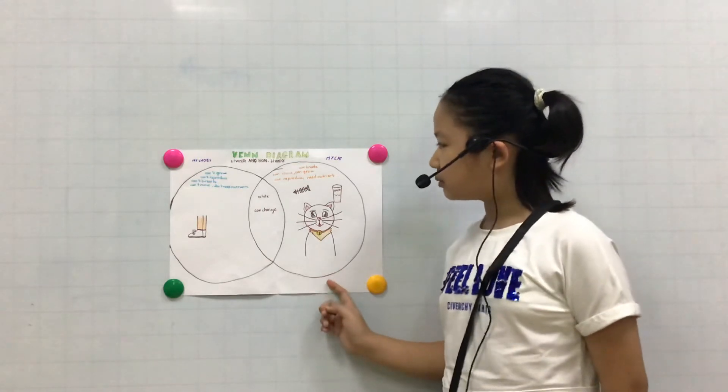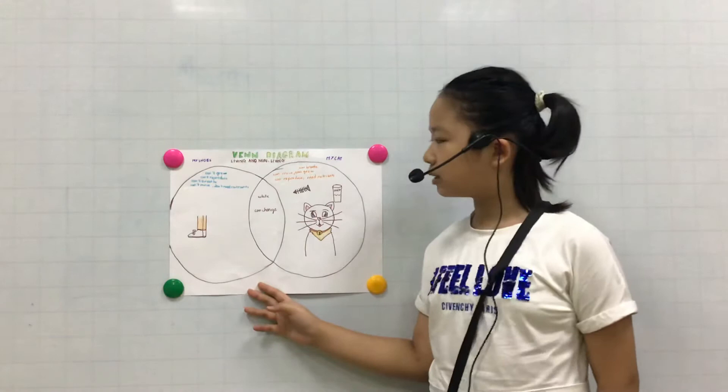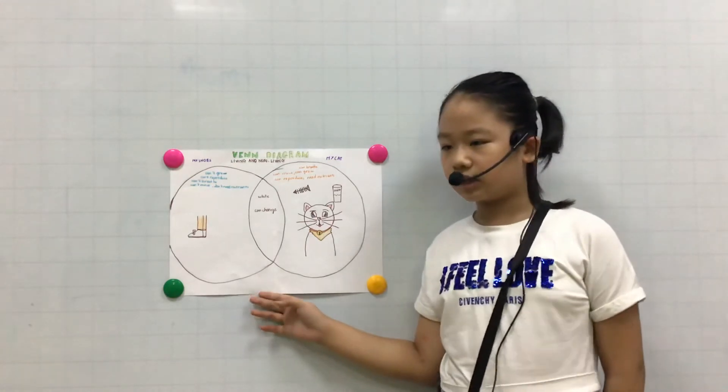The second difference is my cat can breathe but my shoes cannot breathe. My cat uses its nose to breathe.